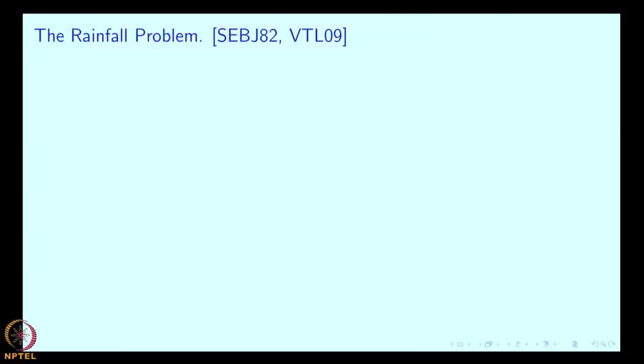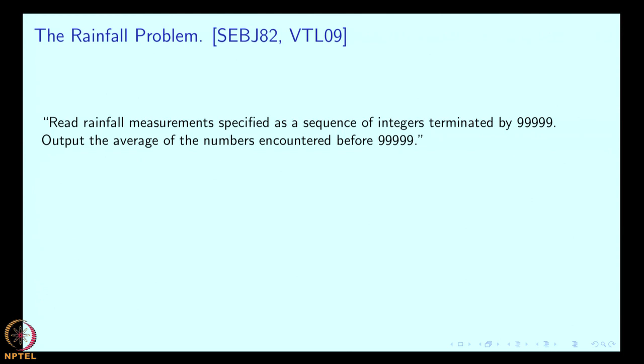Now I want to talk about the experience with this approach, and this is based on work that researchers have done and reported in the educational literature. One of the most famous pieces of work considers the so-called rainfall problem. This problem has been studied for quite some time — Solovey and his colleagues devised it as long ago as 1982, and there are references and studies using the same problem in 2009 as well. The problem is: read rainfall measurements specified as a sequence of integers terminated by 99999, and output the average of the numbers encountered before 99999.